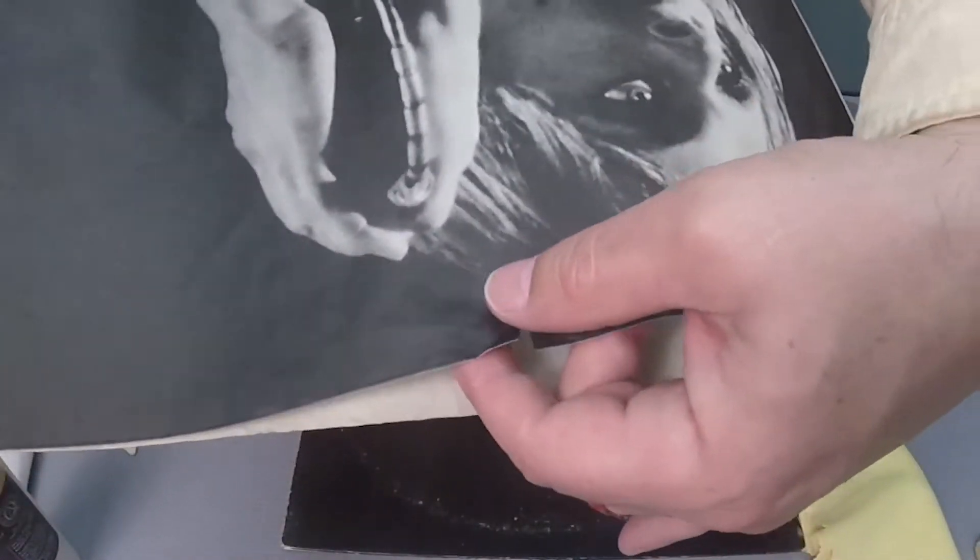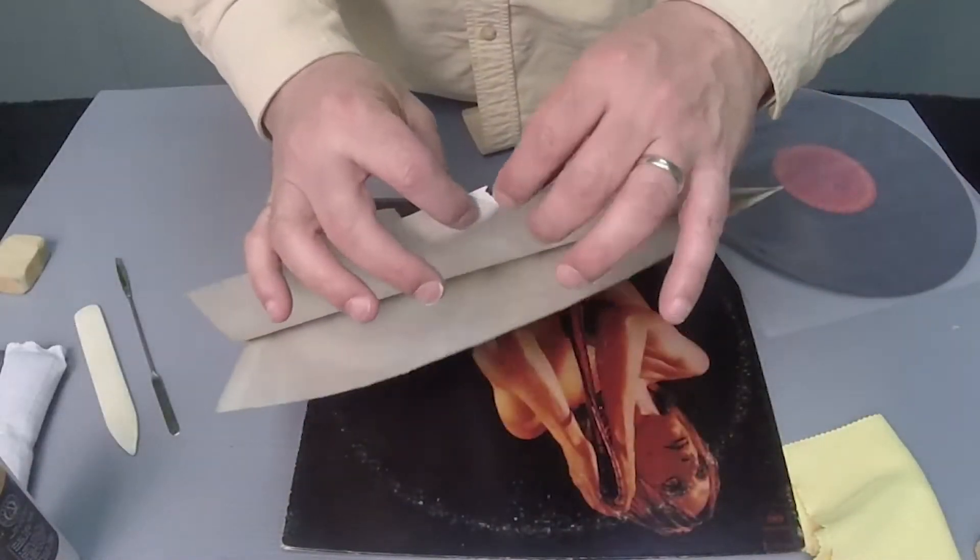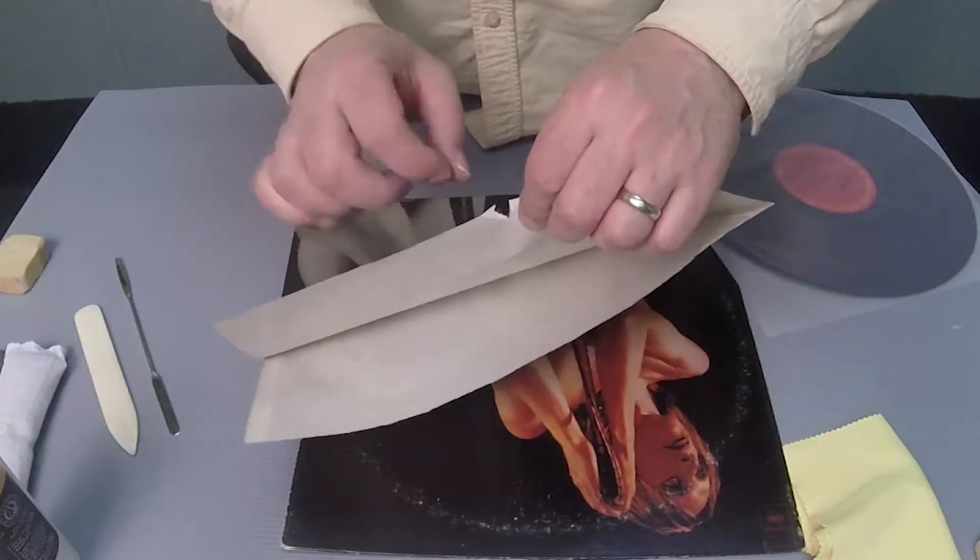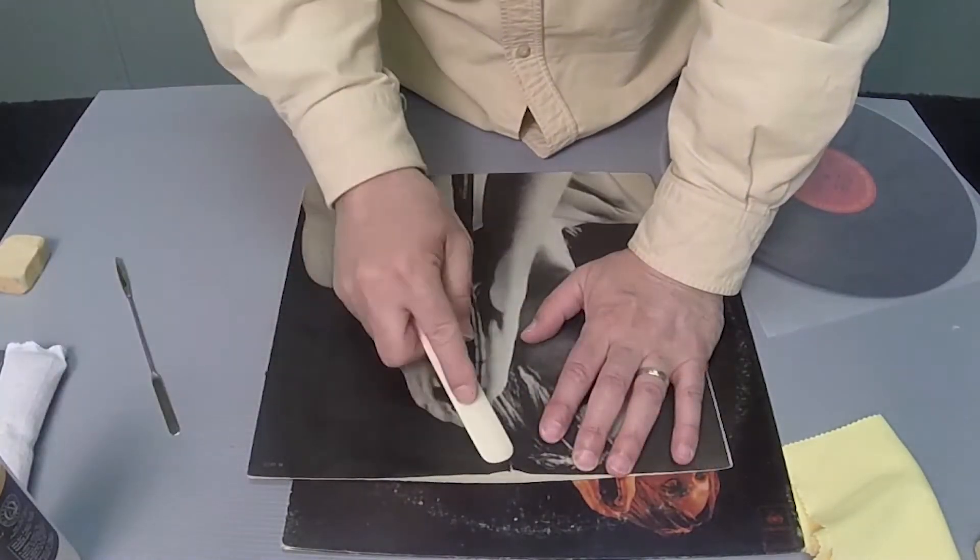One thing that makes this record collectible is that it's a first pressing. Since only first pressings usually include an art sleeve, this sleeve is important and warrants a minor repair.